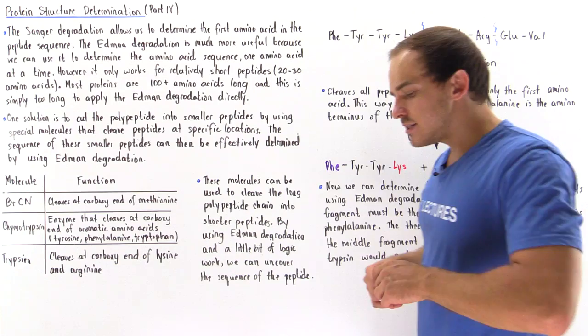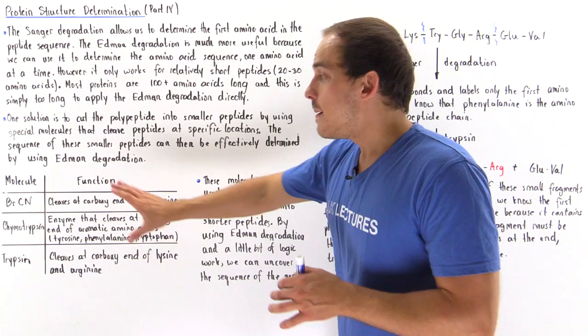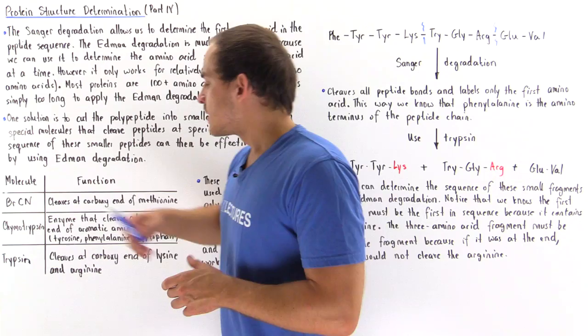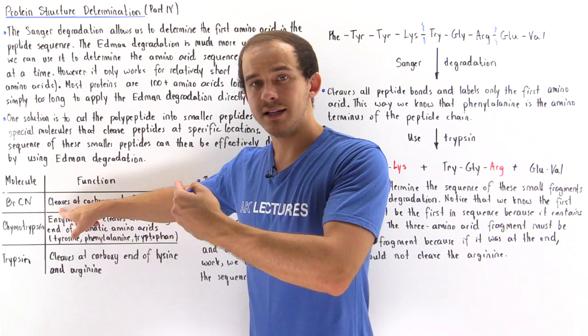Let's examine three important types of molecules that cleave our polypeptide — many more exist, but we'll focus on these three. First, cyanogen bromide cleaves at the carboxy end of only one amino acid: methionine.